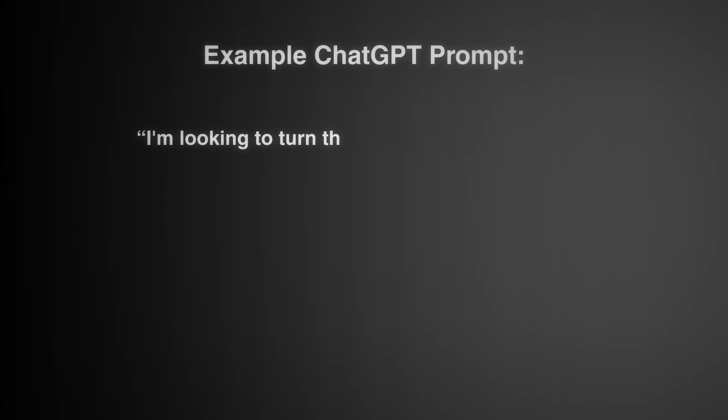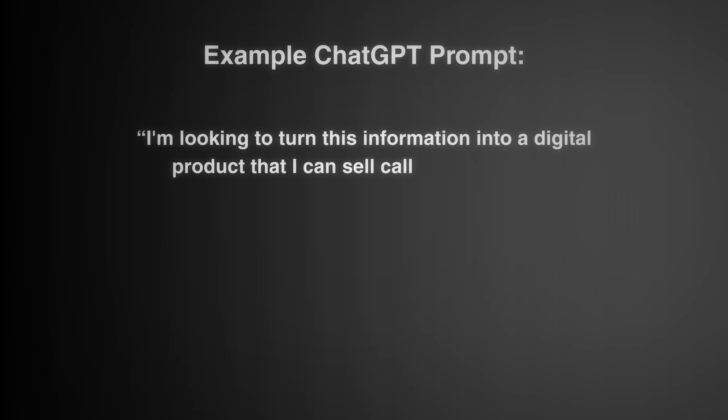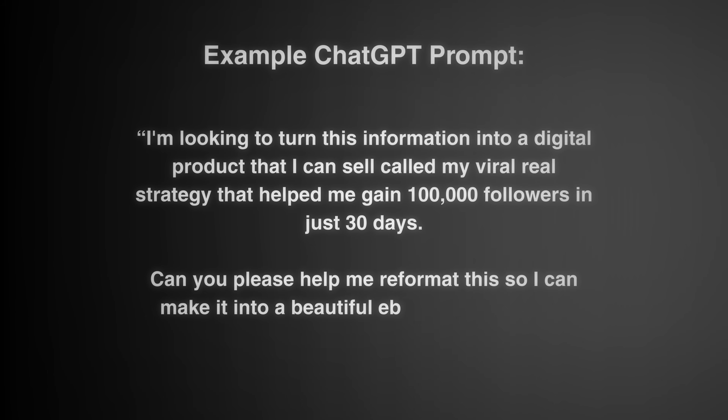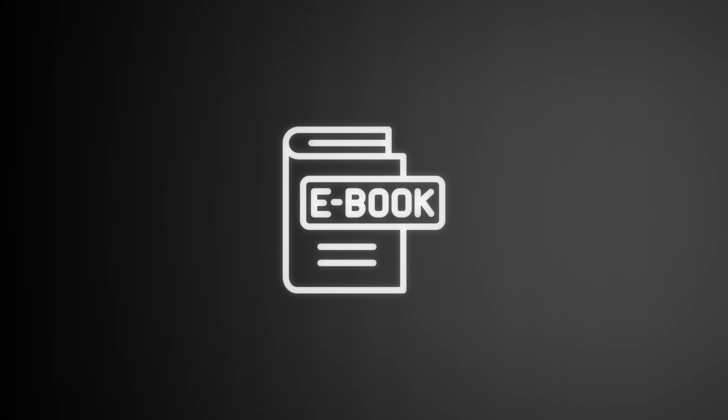It's super important here to ask AI to structure all of your knowledge. Say something like: 'I'm looking to turn this information into a digital product called My Viral Reel Strategy that helped me gain 100,000 followers in just 30 days. Can you help me reformat this so I can make it into a beautiful ebook using Canva?' ChatGPT will give you a complete structure — cover page, introduction, chapter breakdowns, 10 different chapters, even a bonus section, actionable steps, everything. An ebook isn't the only format either — you could turn this into a course, a template, a planner, whatever makes the most sense for your knowledge and industry.